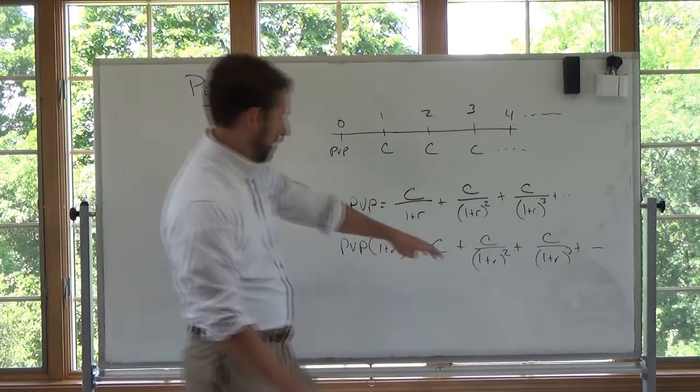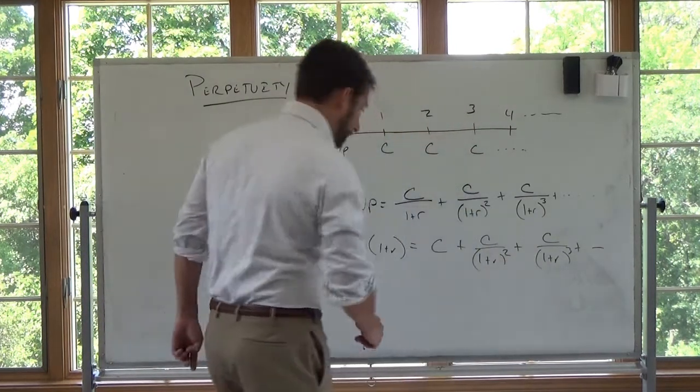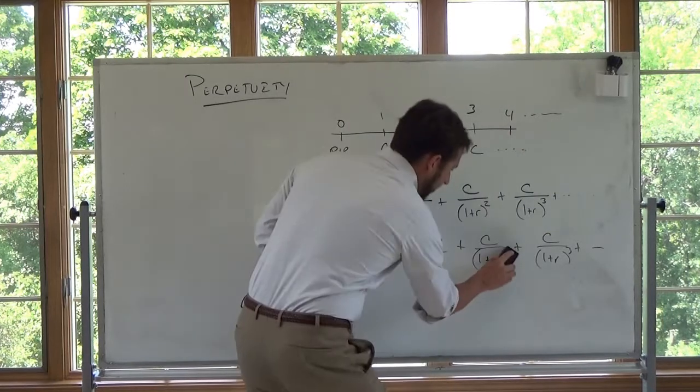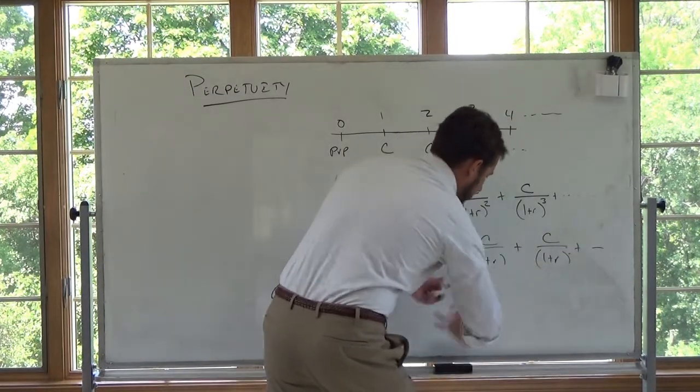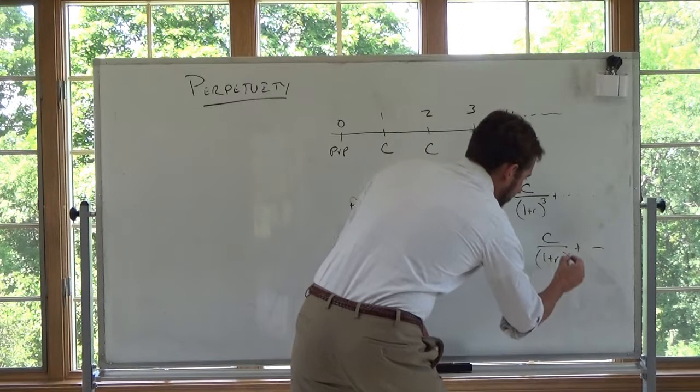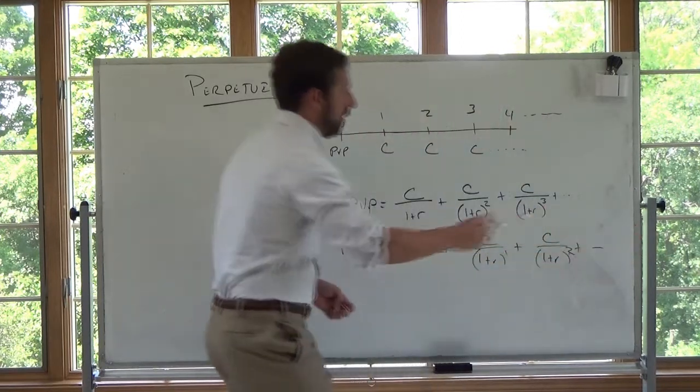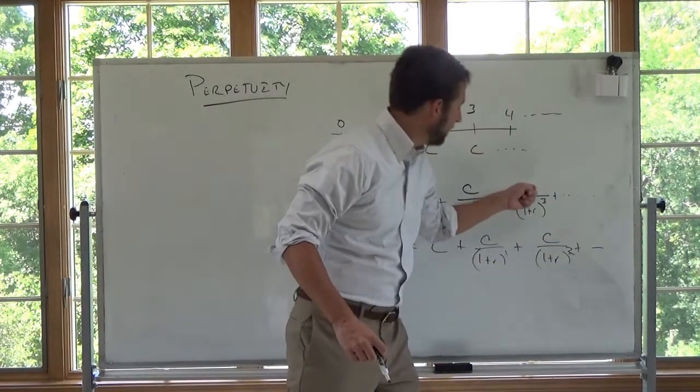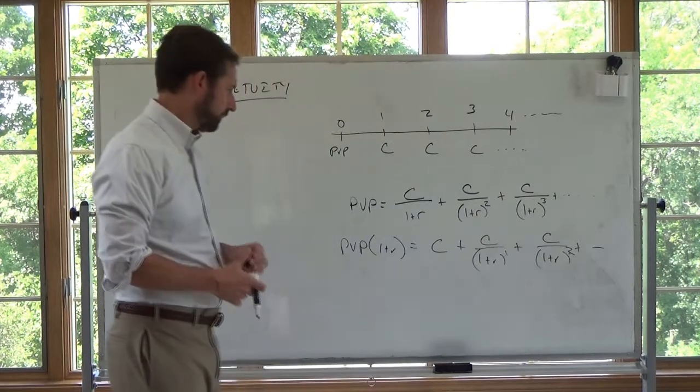Multiply—pardon me, I need 1, 2, so this would be 1, 2, and then third power and so forth. So the next here would be C, 1 plus R to the third.